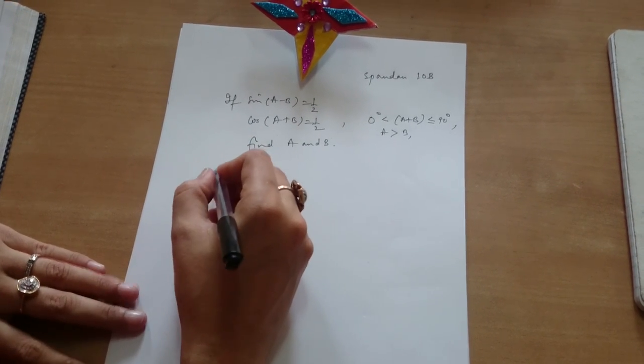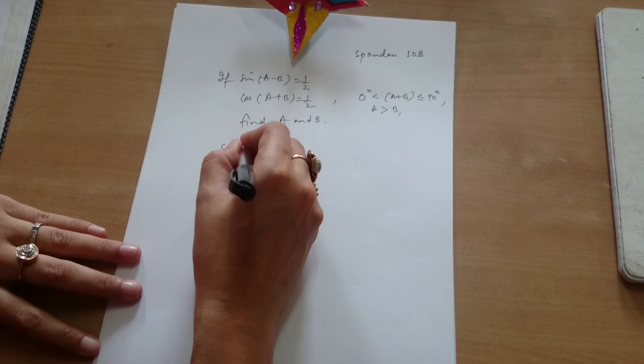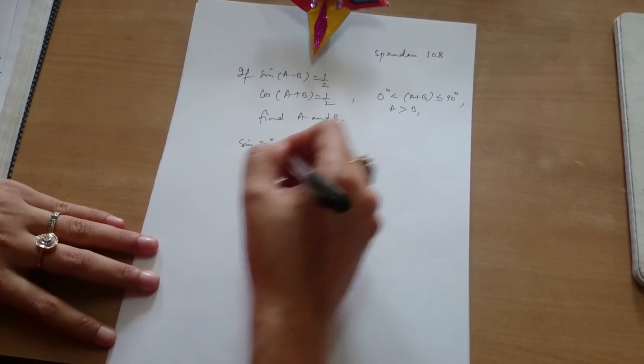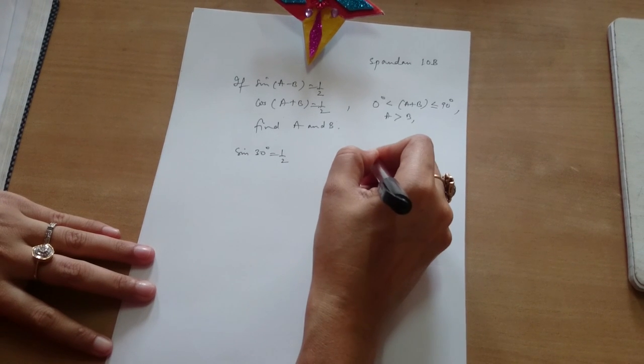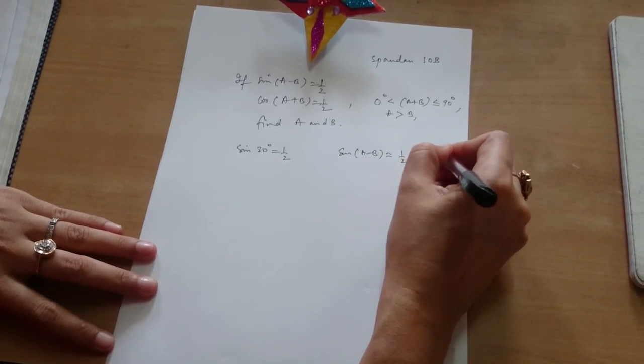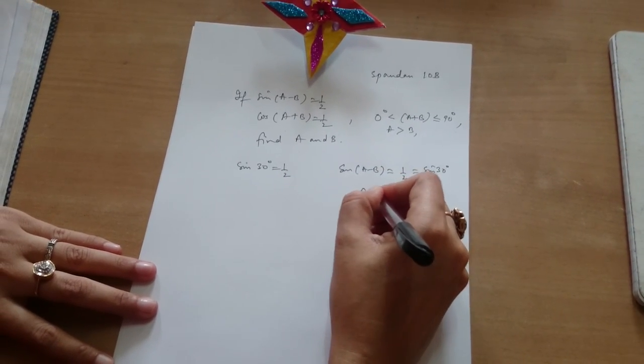Tell me how you will do this. Now, sin 30 degrees is equal to half. So sin(a - b) is also half. It is given, so I can write it as sin 30 degrees.